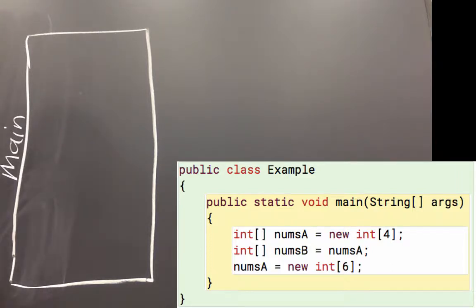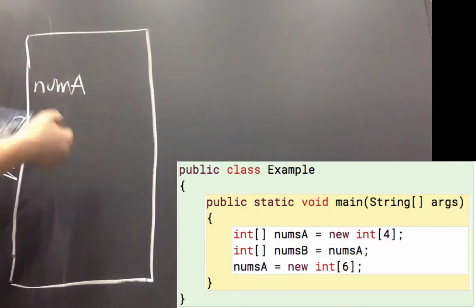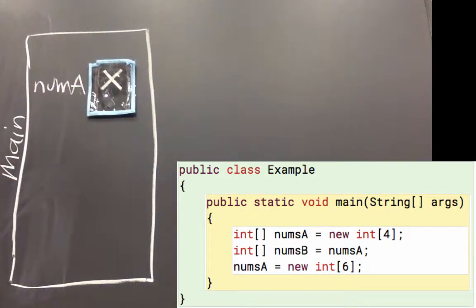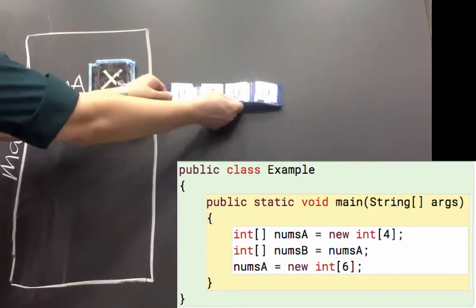So int array, that's int square brackets numsA, creates a new variable named numsA, and that can hold a reference. And here it's going to hold a reference to an int array. The right hand side, new int, and then in square brackets it says four, that creates an int array with four elements.